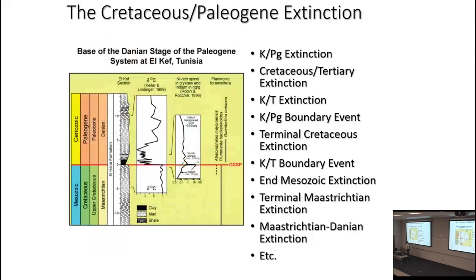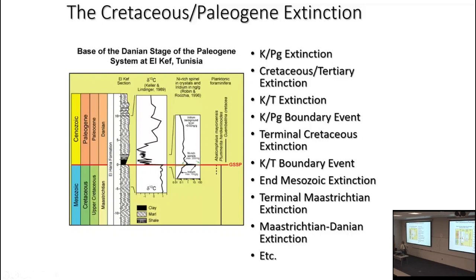In geology there is a particular physical spot in the world — called a GSSP — where a committee of scientists agrees that a specific bed is the physical embodiment of a boundary. In this case it's a spot in Tunisia called El Kef, where the sedimentology of the rocks changes dramatically at the KPg boundary. It's not the only place in the world where there's a dramatic change, but this particular one shows it well. You could fly out to Tunisia and see that boundary yourself.